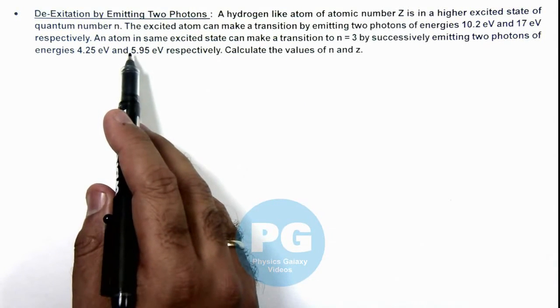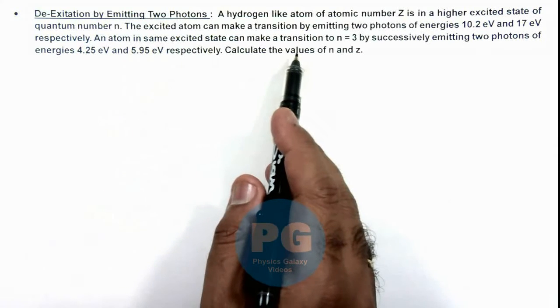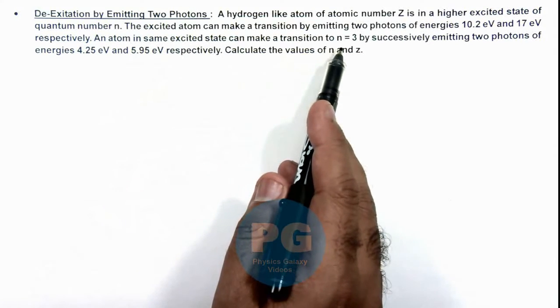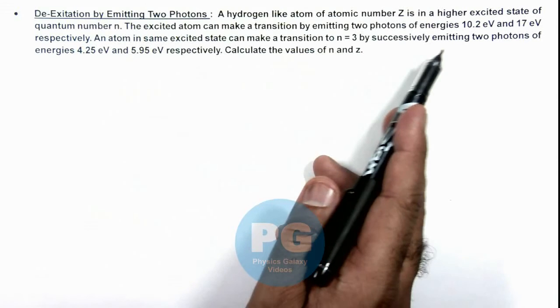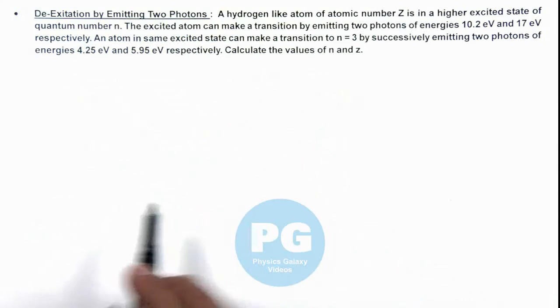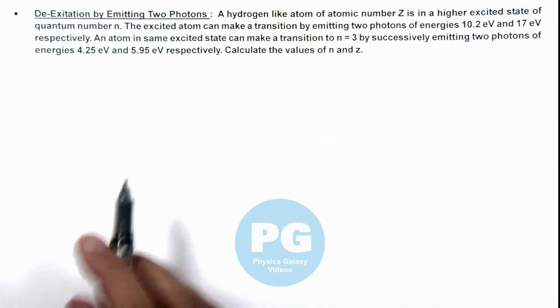The atom in same excited state can make a transition to n equal to 3 by successively emitting two photons of these energies. We are required to now calculate the values of n and z.